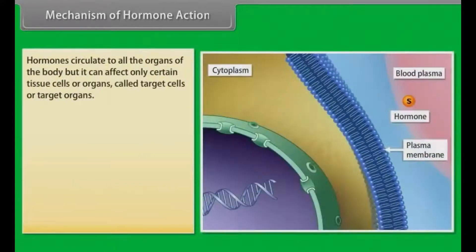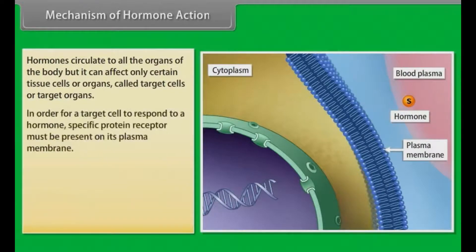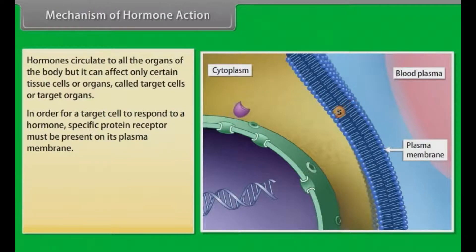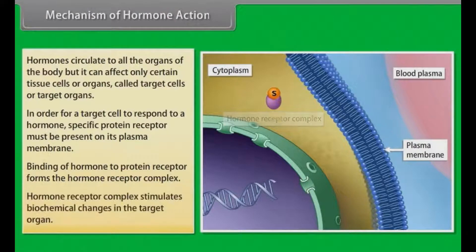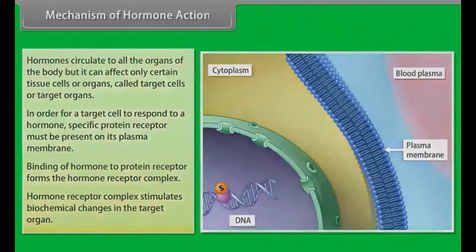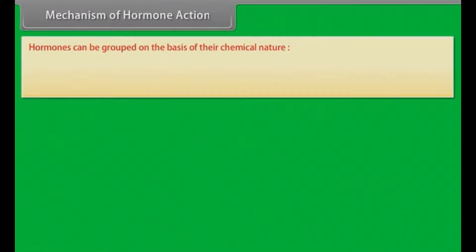Hormones circulate to all the organs of the body but can affect only certain tissue cells or organs, called target cells or target organs. In order for a target cell to respond to a hormone, a specific protein receptor must be present on its plasma membrane. Binding of the hormone to the protein receptor forms the hormone-receptor complex, which then stimulates biochemical changes in the target organ.